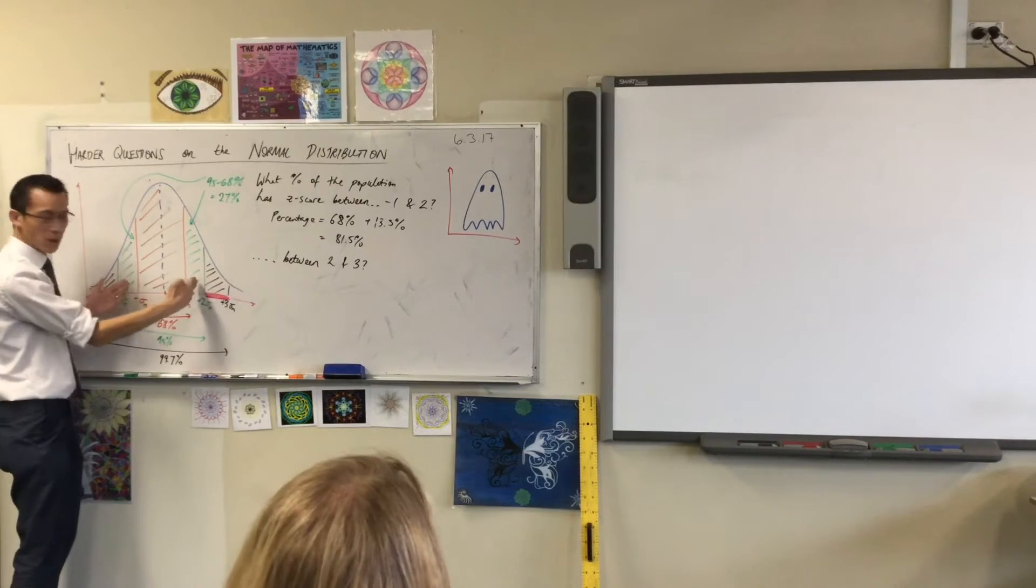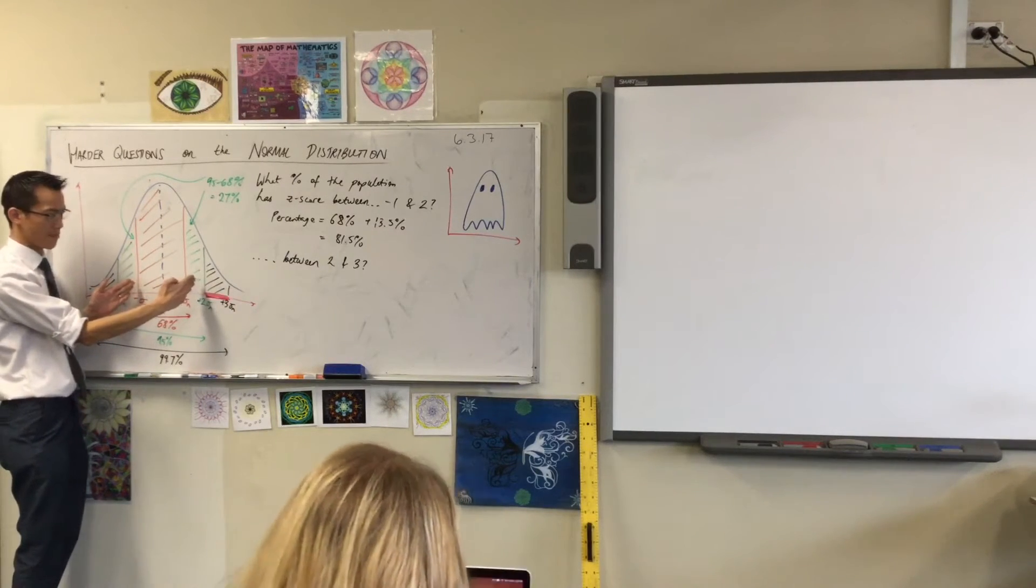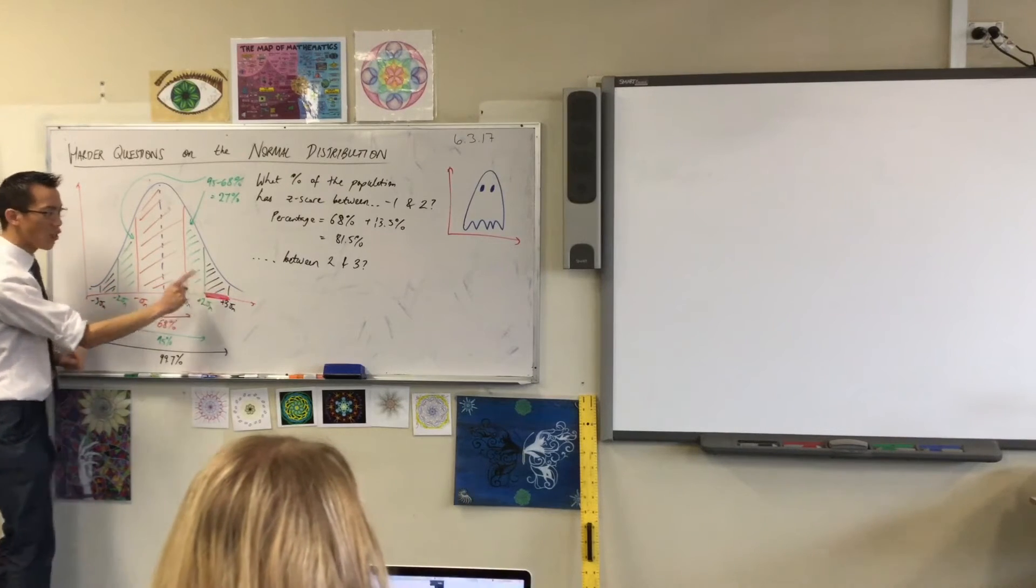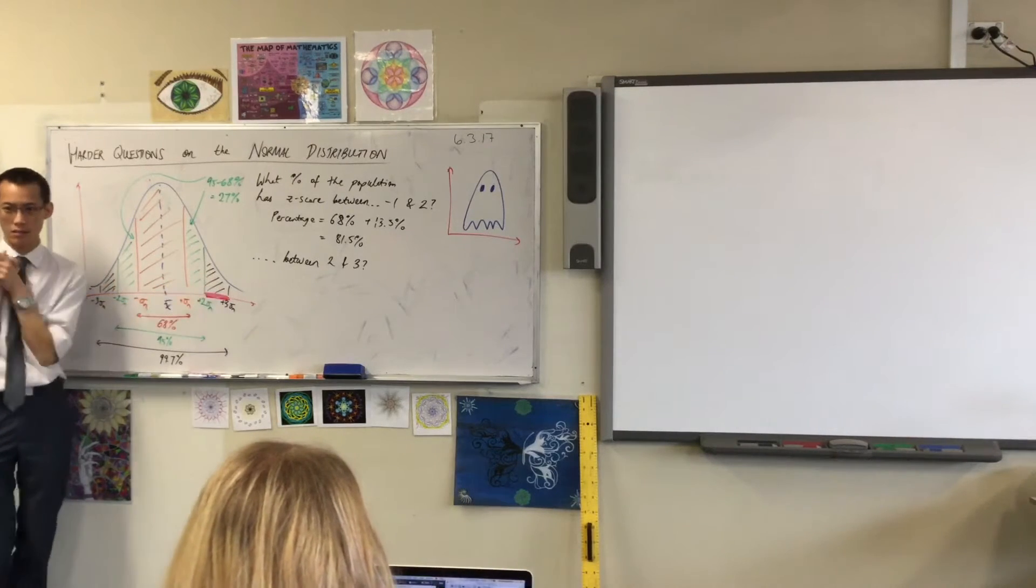And if we go backwards one step, that'll give us not this, but both black areas. Do you agree with that? Does that make sense? So let's just quickly work that out.